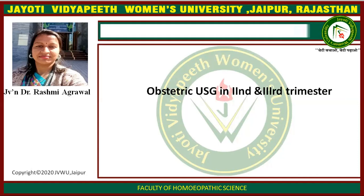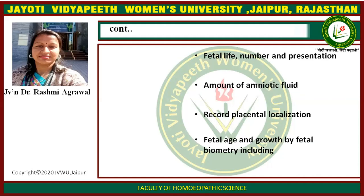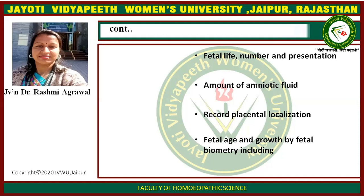In the second and third trimesters, USG is used to assess fetal life, fetal number, and presentation. It is also used to measure the amount of amniotic fluid and to record placental localization — whether the placenta is in the correct position or not.